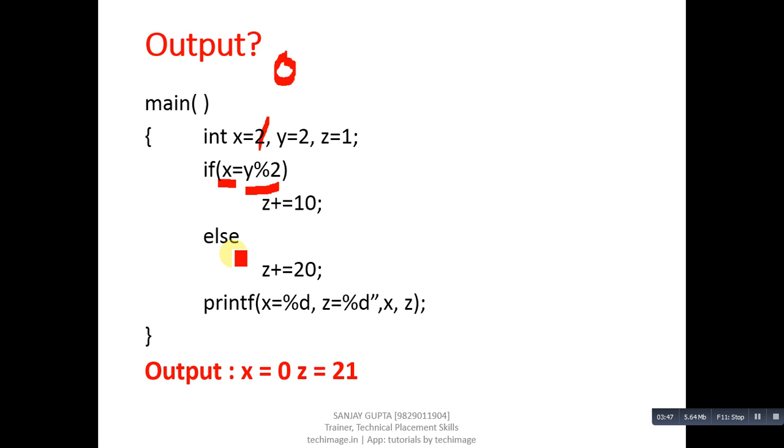0 is treated as false, means else part will be executed. Else contains z plus equals to 20, means z equals to z plus 20. So z is 1, 20 will be added, so it will become 21. You can see the output: x is 0 and z is 21.